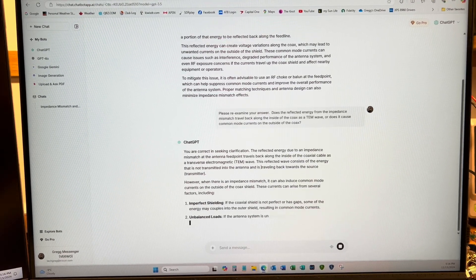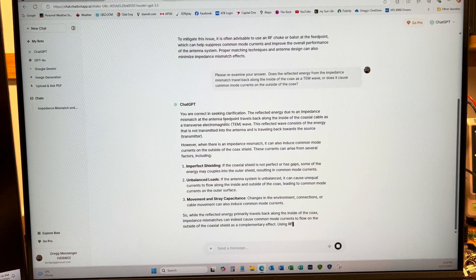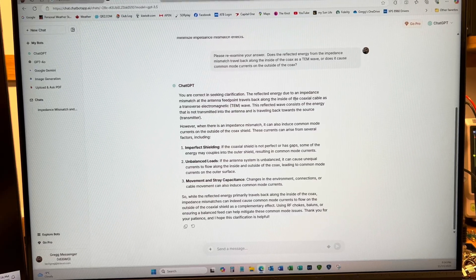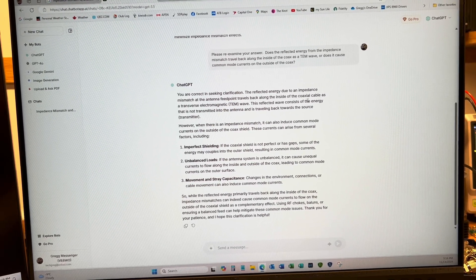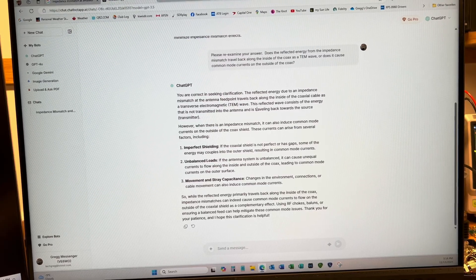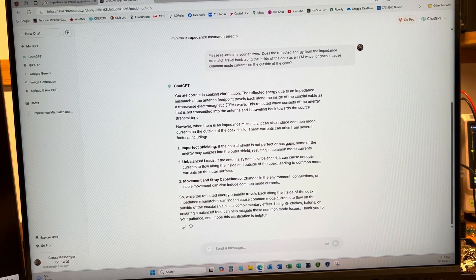The reflected energy due to an impedance mismatch at the antenna feed point travels back along the inside of the coaxial cable as a TEM wave. This reflected wave consists of the energy that is not transmitted into the antenna and is traveling back towards the source.